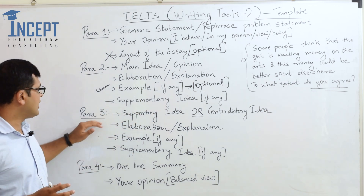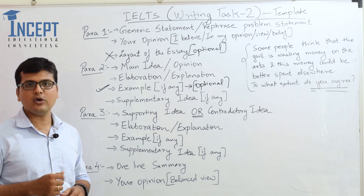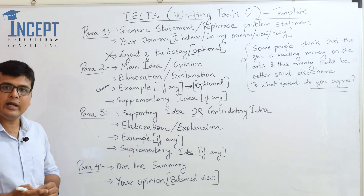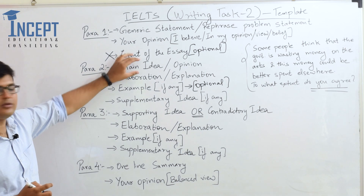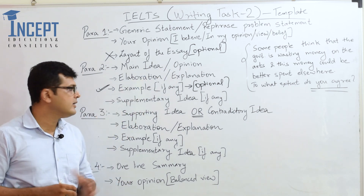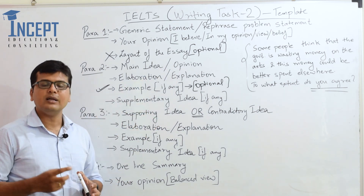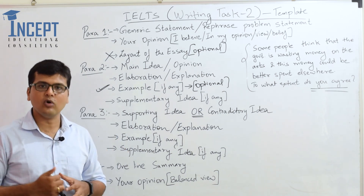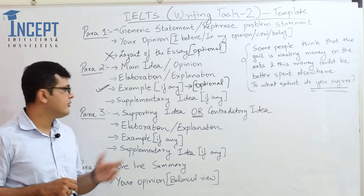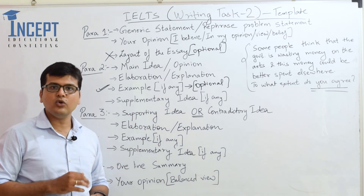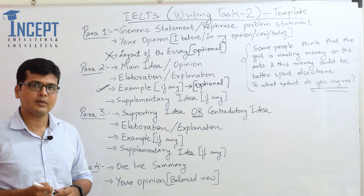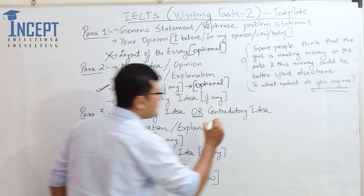We now move on to paragraph 3. There are two approaches: a supporting idea, where you continue the same line of thought — for example, writing about the large number of tourists who come from across the globe to witness artistic monuments and art forms. However, when you do not have many supporting points, this can become a problem. Hence, we can use an alternate method: the contradictory idea.